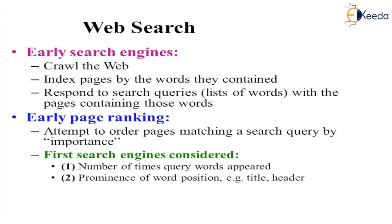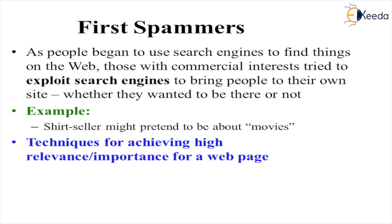Early search engines used crawlers or spiders to crawl web pages. Some words were used to crawl the pages, and pages were indexed by words based on content. Queries requested by the user were responded to based on the words indexed. Early page ranking was used to order pages matching a search query by the importance of that page. The first search engines considered the number of times query words appeared in a page, as well as prominent word positions like the title and header parts of HTML files.